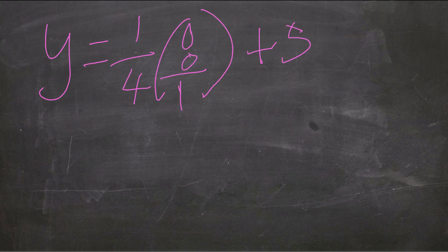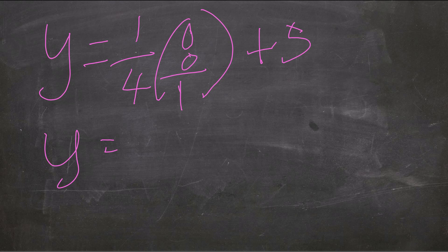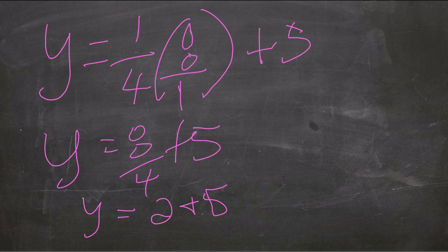So I'm going to take my solution for x. I plugged it into the first equation. You can see here I have y equals 1 fourth times 8 plus 5. So multiplying that across, I get y equals 8 over 4, which gives me 2. Simplifying, I get y equals 7.